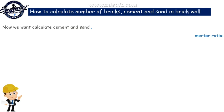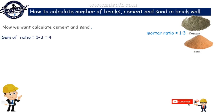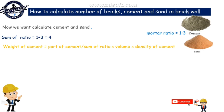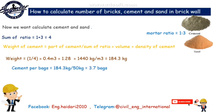Now we calculate cement and sand. Sum of ratio equals 1 plus 3 equals 4. Weight of cement equals part of cement divided by sum of ratio, multiplied by volume, multiplied by density of cement. Weight of cement equals 1 divided by 4, multiplied by 0.4 cubic meter, multiplied by 1.28, multiplied by 1440 kilograms per cubic meter, equals 184.3 kilograms.